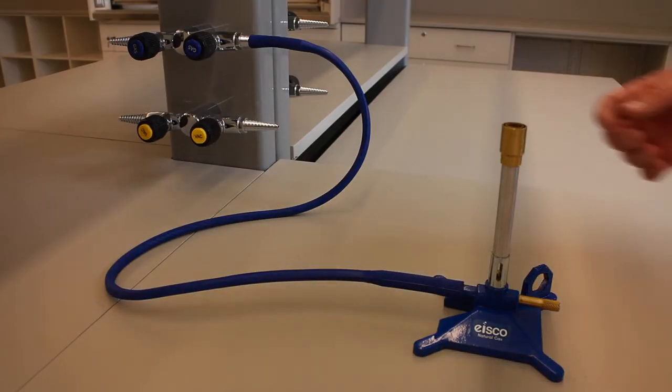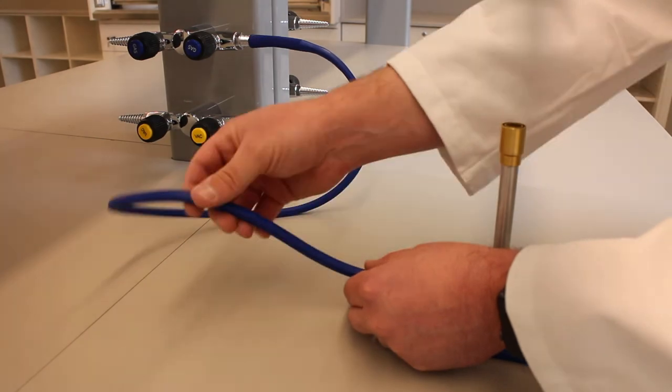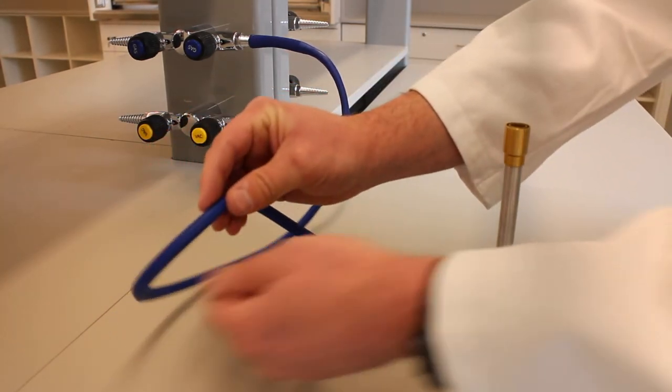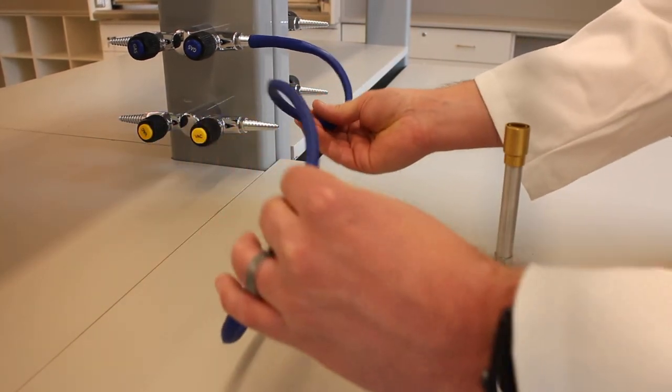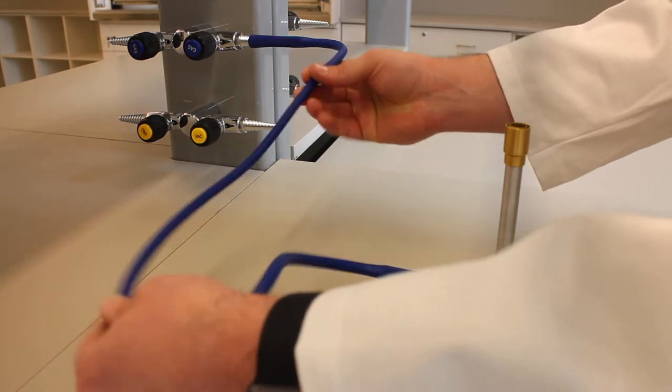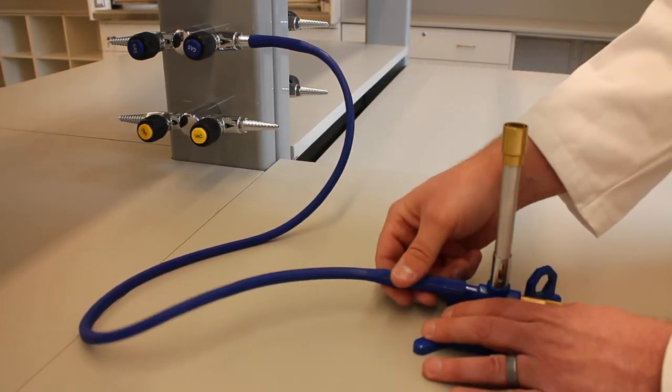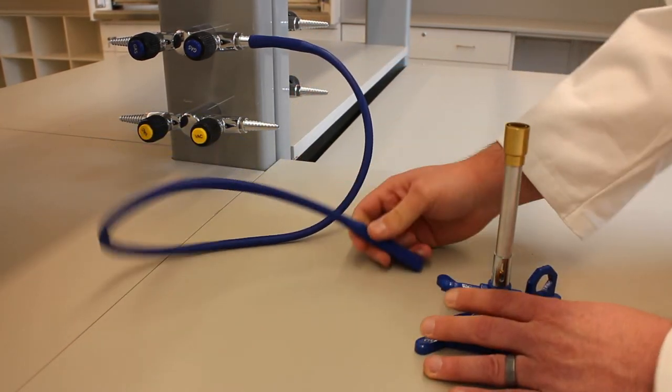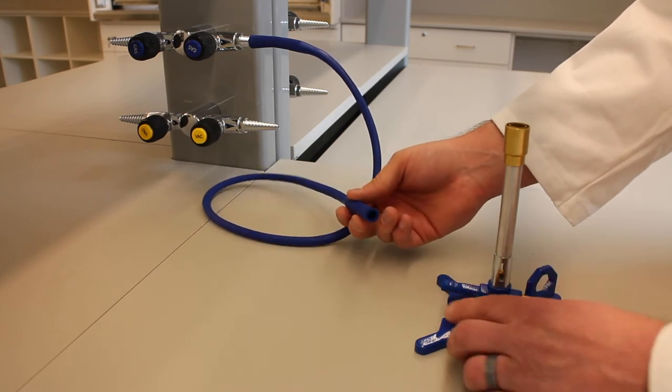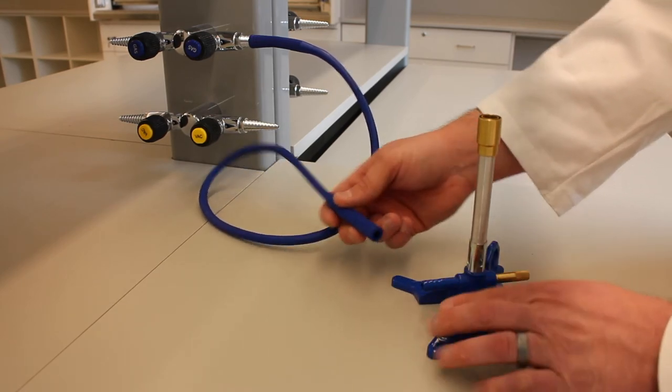Before using your Bunsen burner, start by making sure your gas hose is in good condition and doesn't have any holes. Then, ensure that both ends of the hose are secure, one to the gas outlet on your bench and one to your burner's gas inlet.